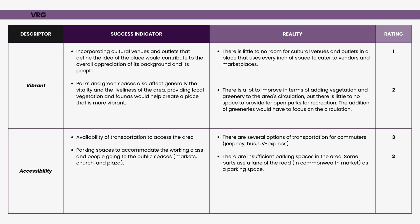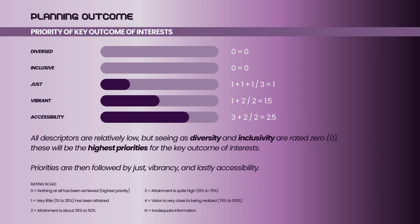Lastly, a place is successfully accessible when transportation is available and there is enough parking to accommodate people and their vehicles. While there are plenty of transportation options available, there is insufficient parking — with road lanes being used as parking spaces due to the lack thereof — giving it a rating of 2.5. Completing the VRG matrix revealed that diversity and inclusivity, both rated zero, are the highest priority, followed by justness, vibrancy, and then accessibility.